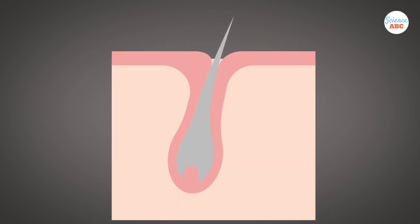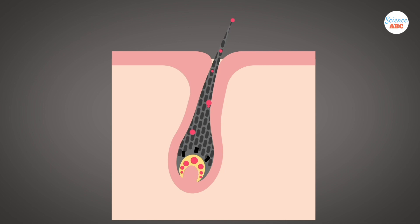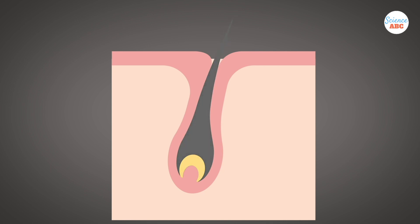A similar process happens with our hair. Melanocytes associated with the hair root will deposit melanin to the cells that compose our hair. Where melanin isn't produced, those areas will turn white, which is why people get white hair.